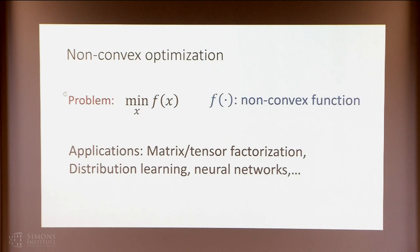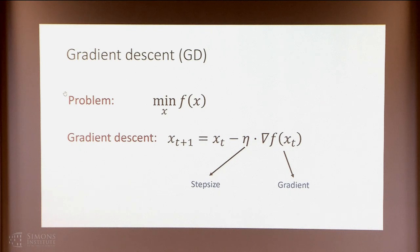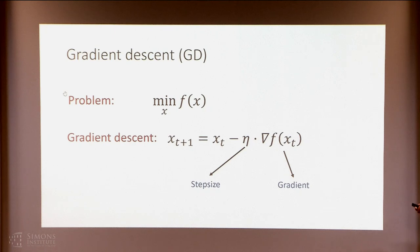Non-convex optimization arises all over the place in machine learning. Applications include matrix factorization, tensor decomposition, neural networks, and so on. The workhorse for solving non-convex optimization problems in practice these days is gradient descent, or gradient descent based algorithms. Given an initial point x0 and a step size eta, gradient descent updates xt to be xt minus the step size times the gradient at xt.